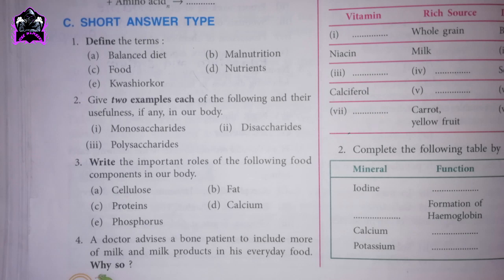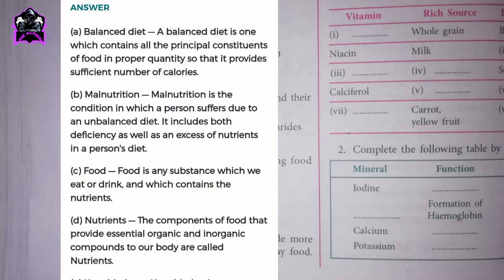Question C, Short Answer Type. First one: define the terms. A. Balanced diet. A balanced diet is one which contains all the principal constituents of food in proper quantity so that it provides a sufficient number of calories.